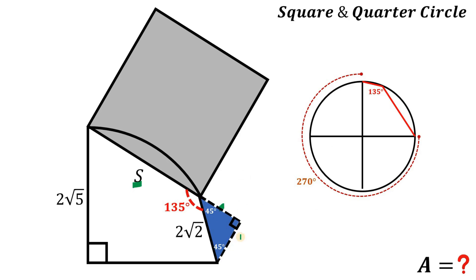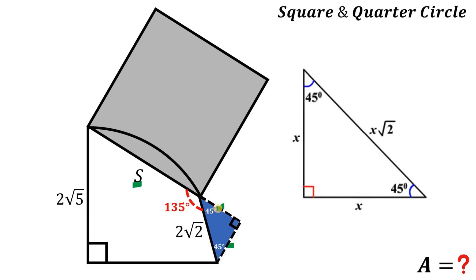Because we know the hypotenuse is 2 times square root of 2, using this concept we can say that the legs of this right triangle is equivalent to 2 units.